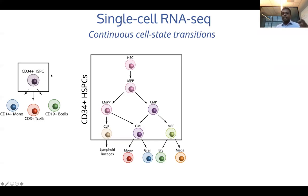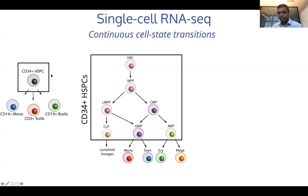The classical view has always been that this is a very discrete step — HSC becomes MPP, then that becomes particular cell types, and so on. But when we looked at CD34-positive hematopoietic stem and progenitor cells and performed single-cell RNA-seq, what we saw is that this is actually a very continuous process. This is a t-SNE plot where each dot represents a cell, and this 2D plot is a representation of cellular relationships in high-dimensional gene expression space.